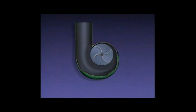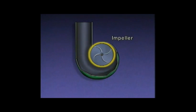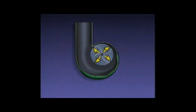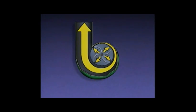Centrifugal compressors work differently. A centrifugal compressor uses a device called an impeller to spin the gas around, which accelerates or increases the speed of the gas flow. The acceleration gives the gas energy. As the gas stream flows out of an impeller, it spreads out and slows down, and as it slows down, its energy is converted into pressure.